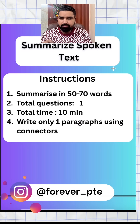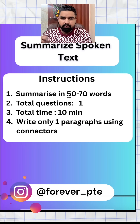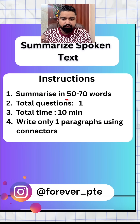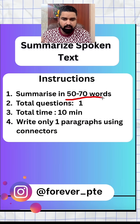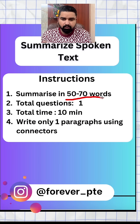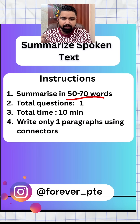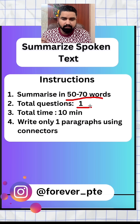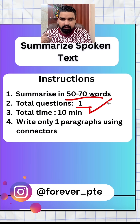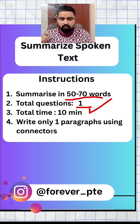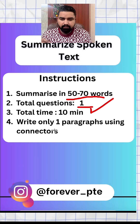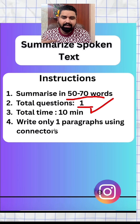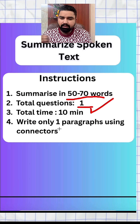So these are some basic instructions. We are supposed to write 50 to 70 words in summarized spoken text. There will be one question in your exam and you will get 10 minutes to solve it. You're supposed to write only one paragraph and you need to connect the lines using connectors.